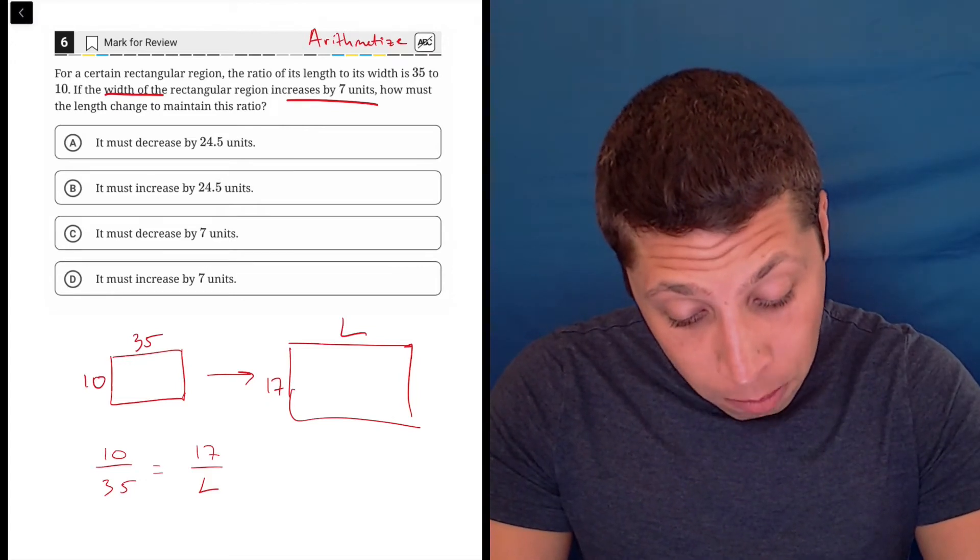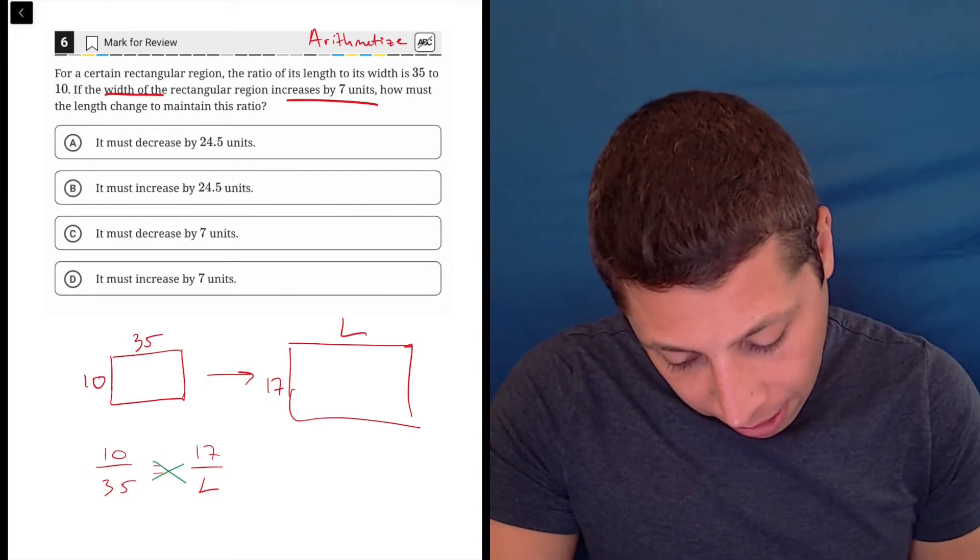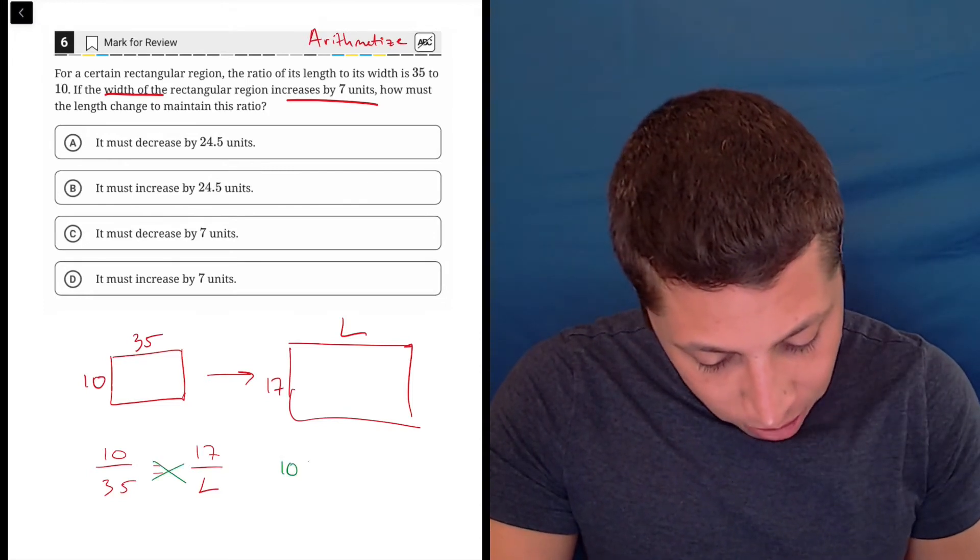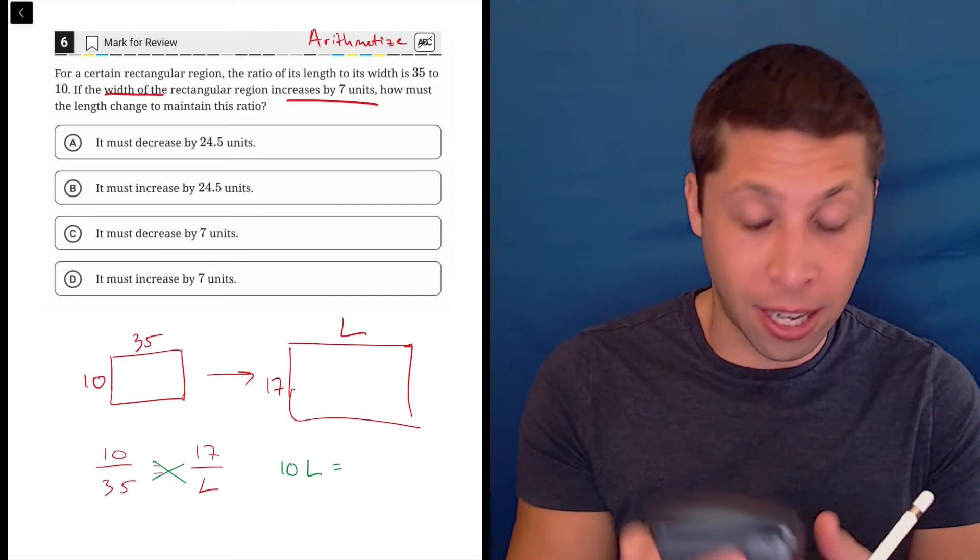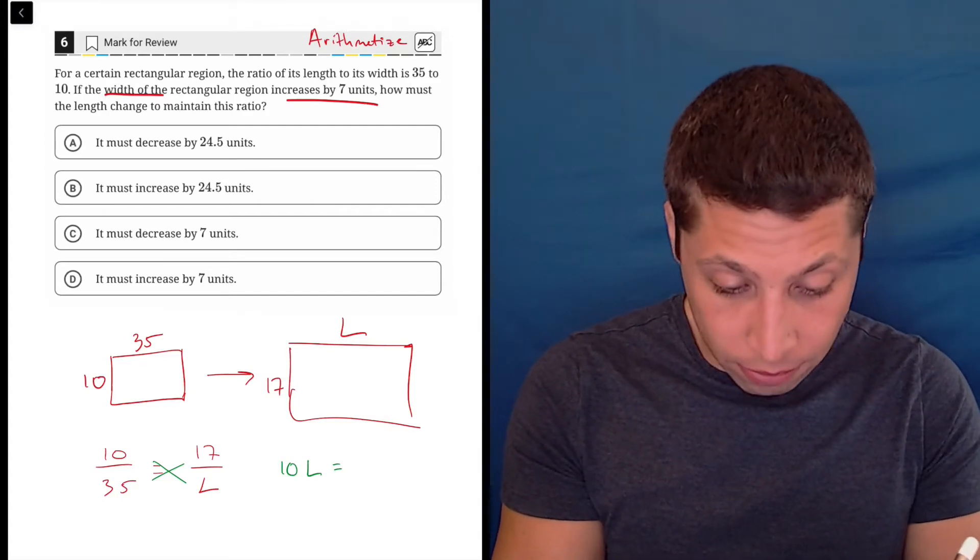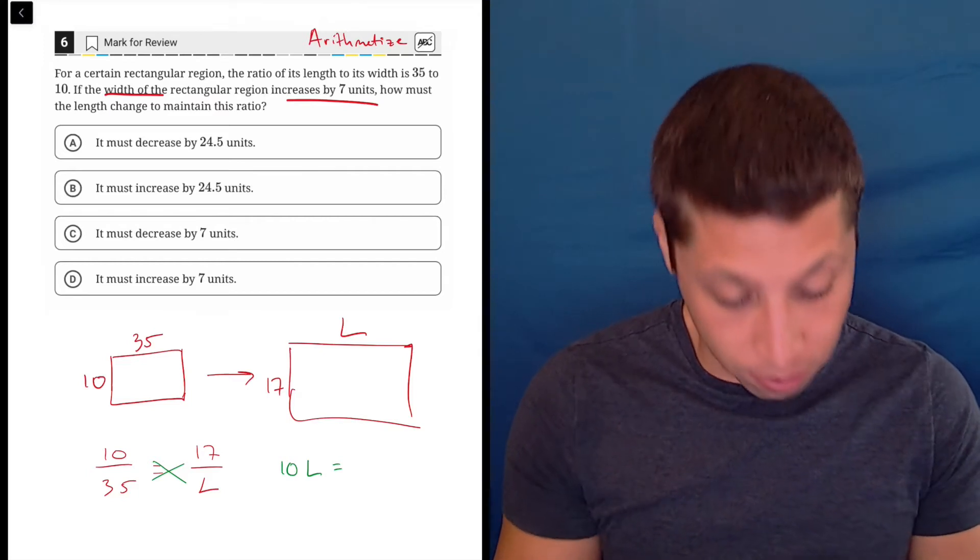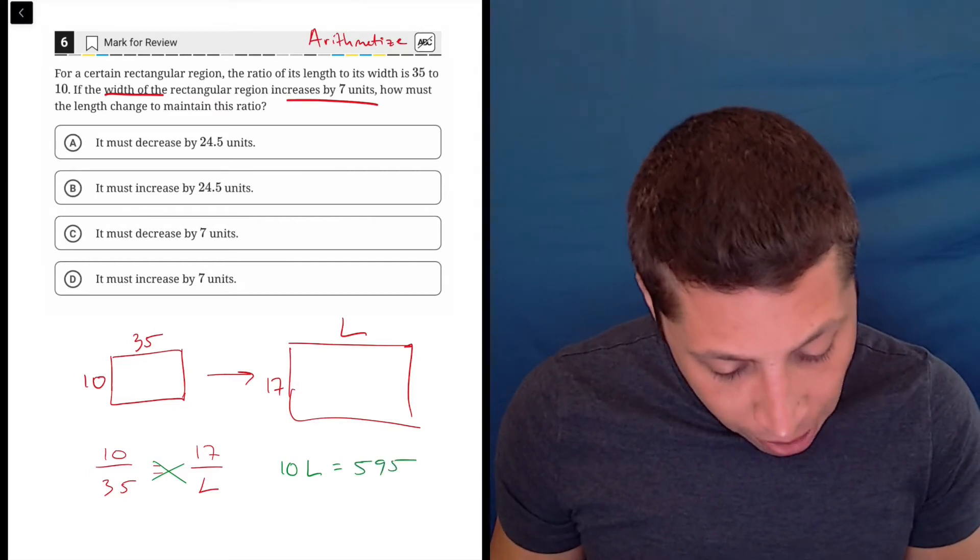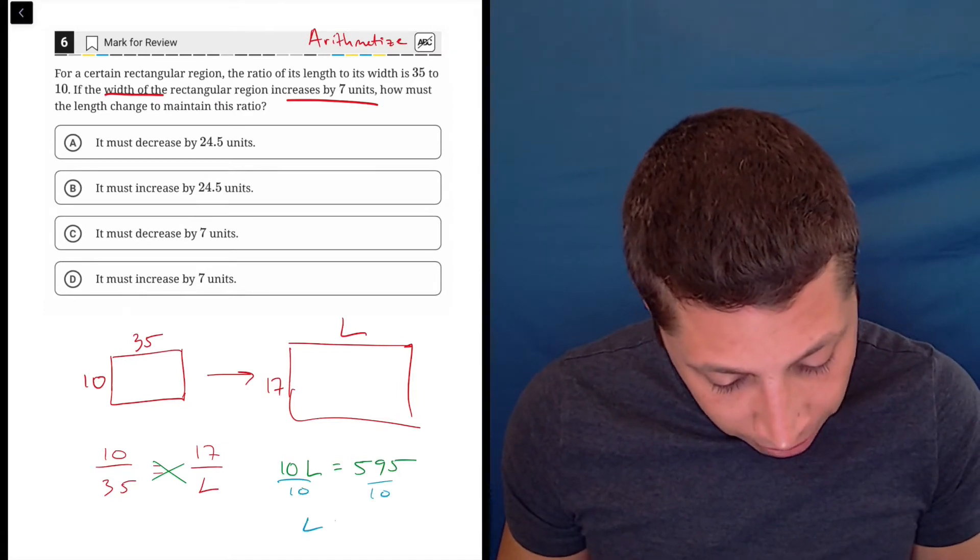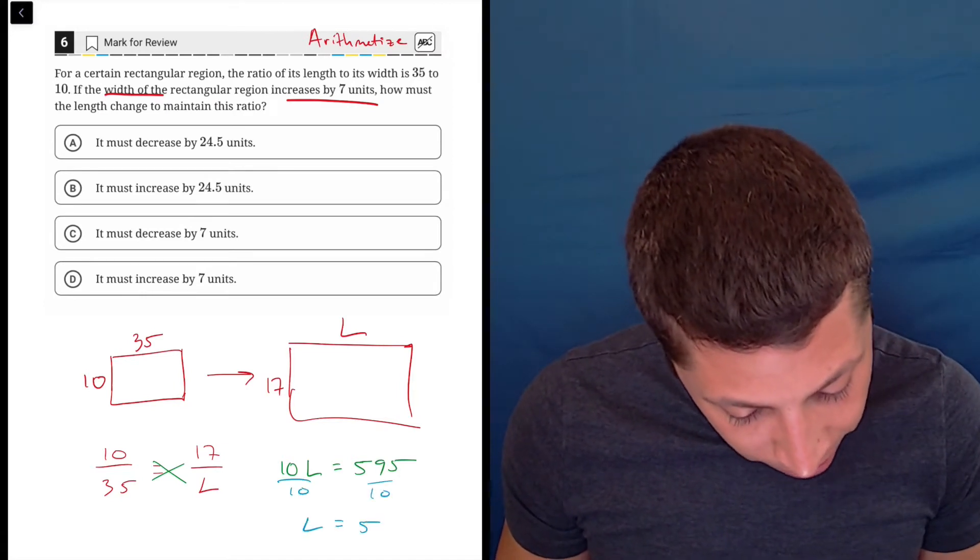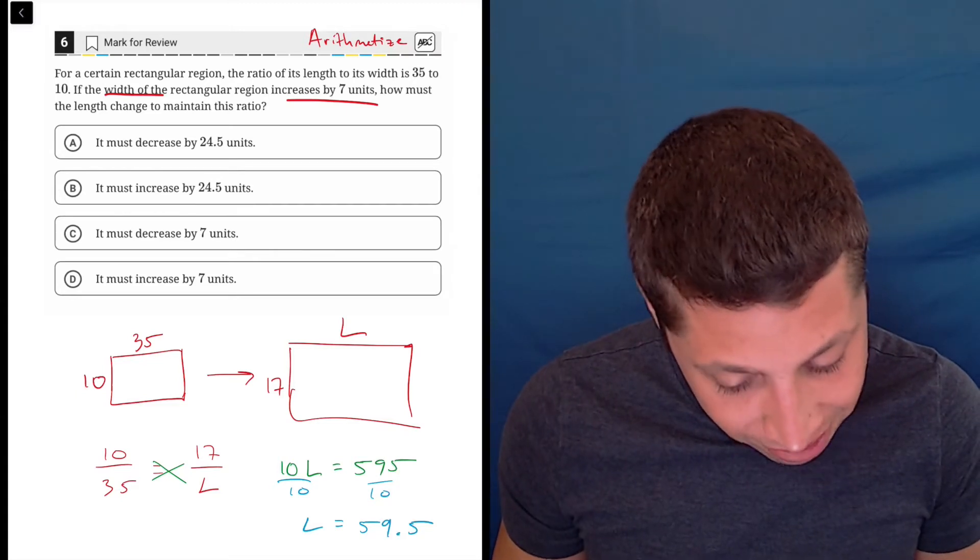Now I would just cross multiply and divide. L times 10 and 35 times 17, so 10L is, and here's where I use my little scientific calculator. 17 times 35 is 595, so dividing by 10 here is very easy. That is 59.5.